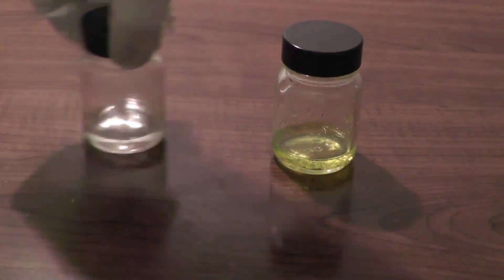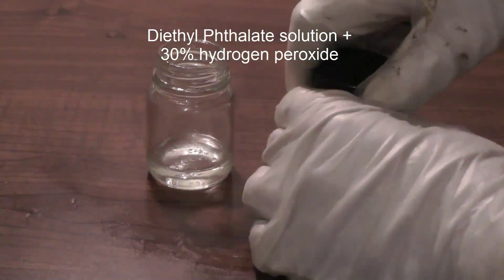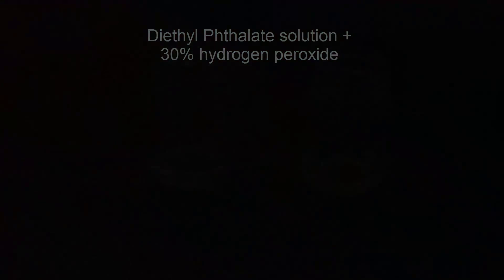To start the glow, take some 30% hydrogen peroxide. Now turn off the lights and mix them.